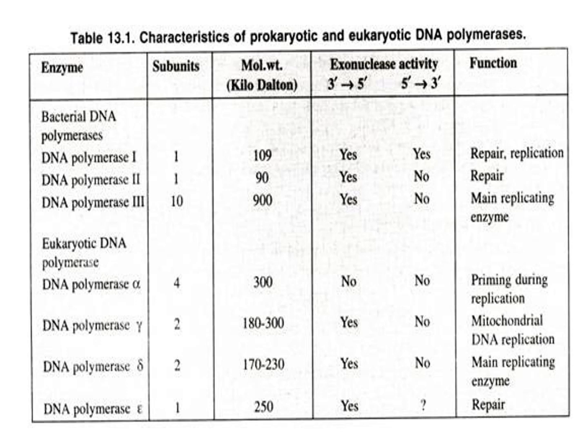Looking at this comparison table, you can understand the different types of DNA polymerases in both prokaryotes and eukaryotes. In prokaryotes, we have 3 important enzymes: polymerase 1, 2, and 3. Polymerases 1 and 2 have only 1 subunit each, whereas polymerase 3 has 10 subunits. The molecular weights are 109, 90, and 900 kilodaltons respectively. Proofreading activity is found in all three, whereas excision repair activity is found only in DNA polymerase 1. The key enzyme for replication is DNA polymerase 3; polymerase 1 is involved in replication and repair, while polymerase 2 is only involved in DNA repair.